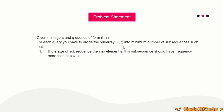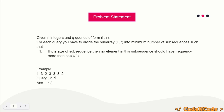We have to divide the subarray into the minimum number of subsequences, keeping in mind that if a subsequence's size is x, no element should have frequency more than ceil(x/2). For example, consider the query from index 2 to 5. The answer would be 2, because if you take the whole subarray as one subsequence, frequency of 3 is 3 but ceil(4/2) = 2, so it violates the condition. Dividing into two — {3, 2, 3} and {3} — both are valid, so the answer is 2.